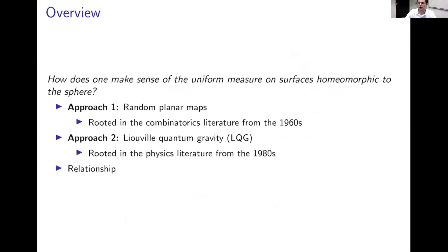One of the questions motivating what I'm going to talk about is: how should one make sense of picking a surface uniformly at random that is homeomorphic to the sphere? There have been a couple of different approaches. One is based on discretizing the question, related to random planar maps — a subject rooted in combinatorics going back to the 1960s, when Tutte enumerated various types of planar maps. There's also another theory of random surfaces developed in a different context in the continuum, called Liouville quantum gravity, coming from physics literature in the 1980s. I'll talk about what these things are, how they're related, and some applications.